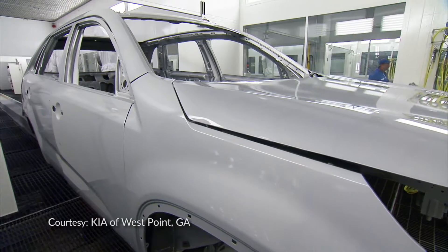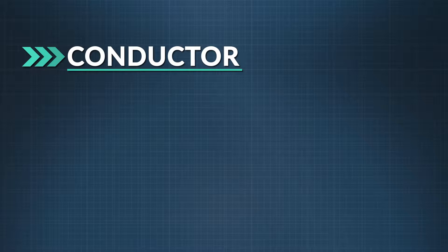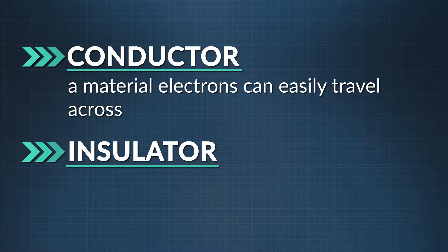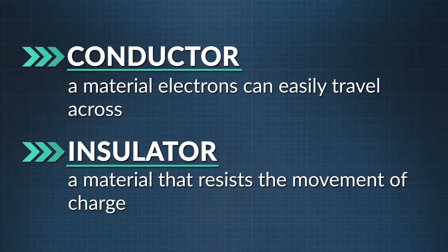Now, there are some rules about how charges move. Metal, like in cars, is one of the better conductors of electricity. A conductor is a material electrons can easily travel across. An insulator, like a car's tires, is a material that resists the movement of charge. Every material lets charge move to some extent — we just call them conductors or insulators depending on where on the spectrum they fall. Even if objects start out neutral, there are several ways we can give them a negative or positive charge. Let's try some experiments to show you how it's done.